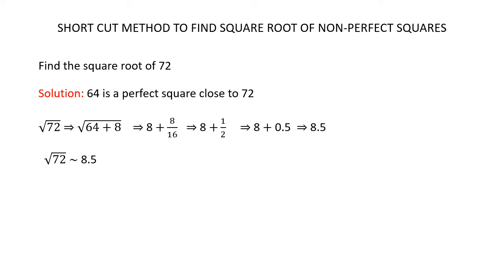Find the square root of 72. Since 64 is a perfect square close to 72, write the square root of 72 as the square root of (64 + 8), because 64 + 8 = 72. The square root of 64 is 8. Write the plus sign, place 8 in the numerator, and multiply 8 by 2 to get 16 in the denominator. Now we have 8 + 8/16 = 8 + 1/2 = 8 + 0.5 = 8.5. So the square root of 72 is approximately 8.5.